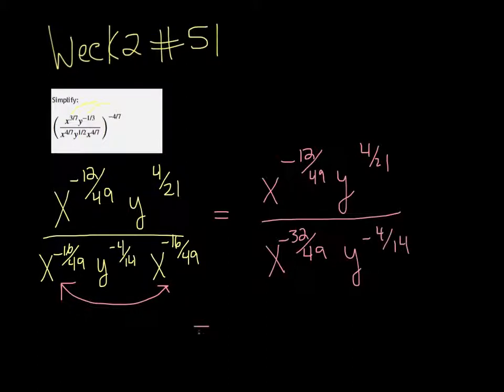Now we're going to combine them using the quotient rule. There's an x in the top and x in the bottom, so you can divide them by subtracting their exponents.